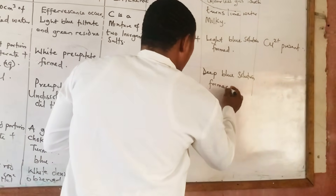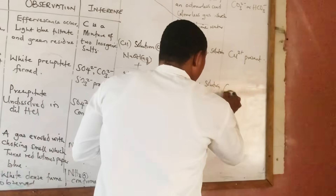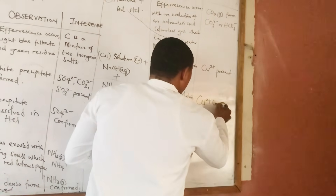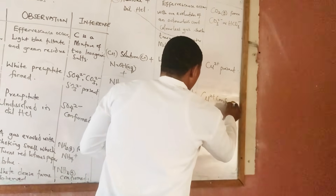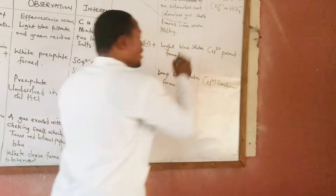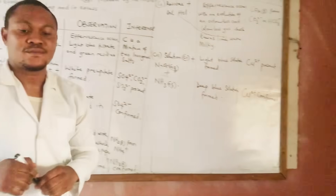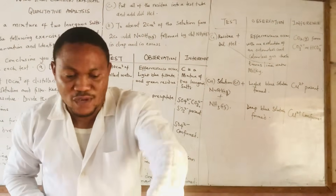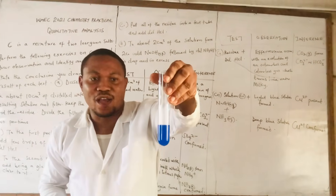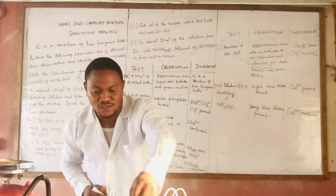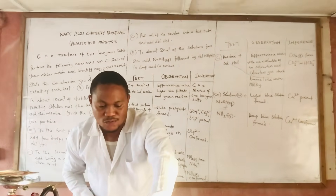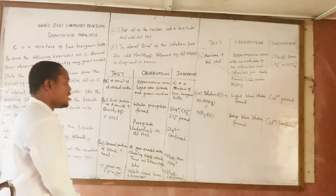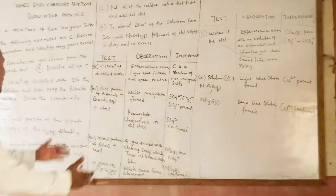When we added ammonia in excess we have a deep blue solution formed, which means our copper(II) ion, Cu²⁺, is confirmed. Can you see the deep blue solution? Cu²⁺ is confirmed.